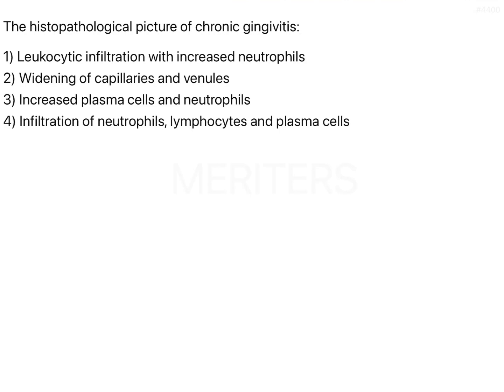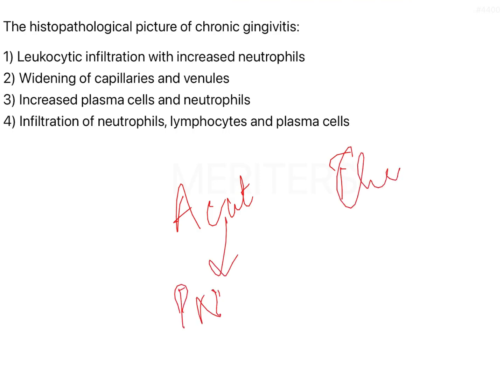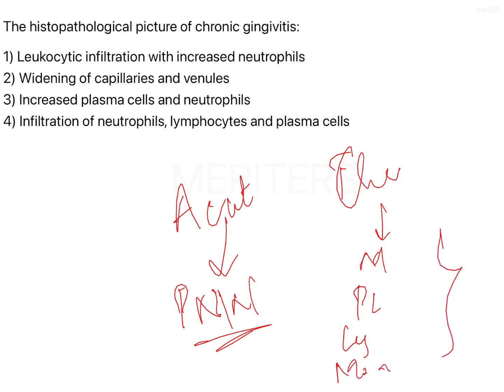Acute inflammation and chronic inflammation are the two types of inflammation. In acute inflammation, the most important cells are your polymorphonuclear cells — that is, your neutrophils. These neutrophils are going to be the first cells that ward off whatever irritating substance is present. Whereas in chronic inflammation, you have all the cells of chronic inflammation: macrophages, plasma cells, lymphocytes, and monocytes.